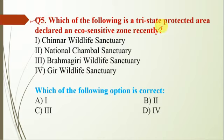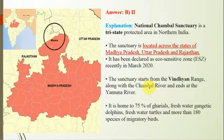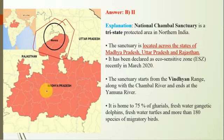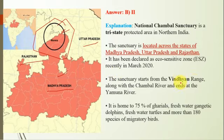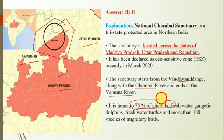Question number 5: which of the following tri-state protected areas has been declared an eco-sensitive zone recently? The correct answer is National Chambal Sanctuary, so option will be D. A map is given. It is a sanctuary that is a tri-state protected area in Northern India, located in the states of Madhya Pradesh, Uttar Pradesh, and Rajasthan. It has been declared an eco-sensitive zone recently. The sanctuary starts from the Vindhya range along the Chambal river and ends at the Yamuna river. It is home to 75% of Gharials. UPSC has also previously asked about Gharial habitation, and the answer was the Chambal Sanctuary.